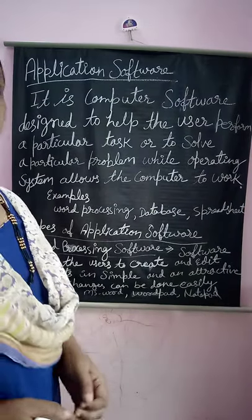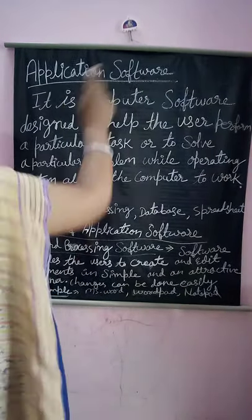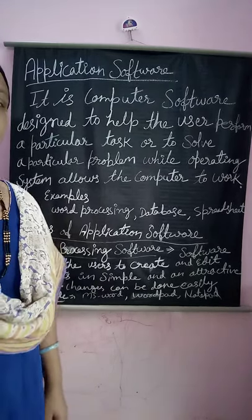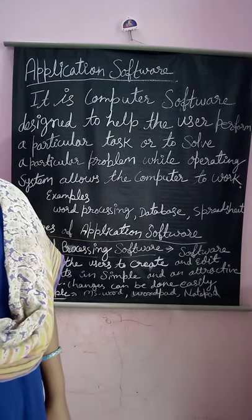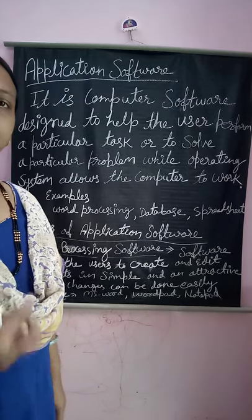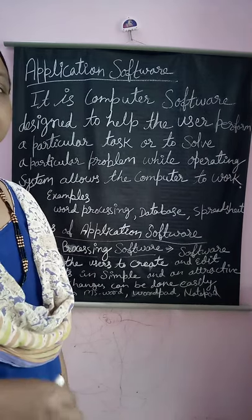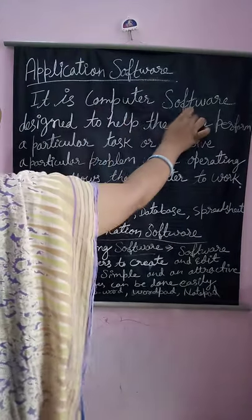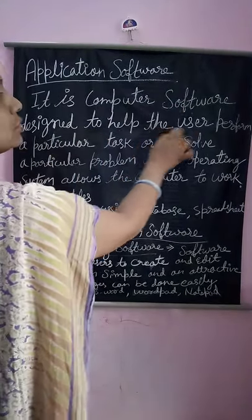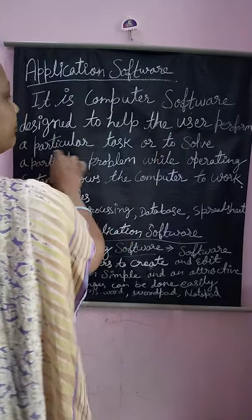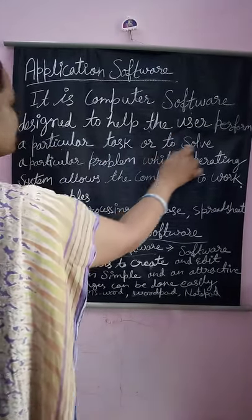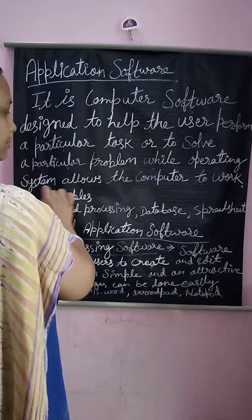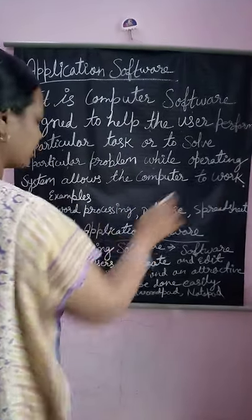Today we will study about application software. Application software means software which is used for a specific purpose — it is dedicated to a particular work. It is computer software designed to help the user perform a particular task or solve a particular problem, while the operating system allows the computer to work.